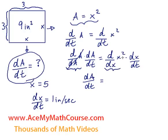Now, the derivative of x squared with respect to x is just 2x. Of course, according to the power rule. We just bring down the exponent. And dx/dt, we already knew that that's just equal to 1, because that's how fast the sides are increasing. 1 inch per second.